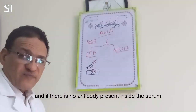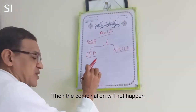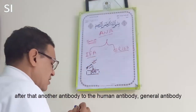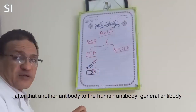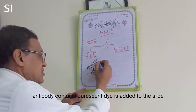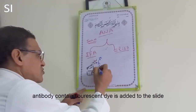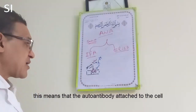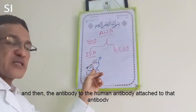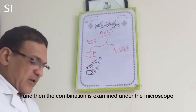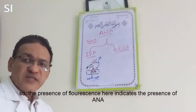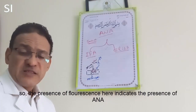If there is no antibody present inside the serum, the wash will remove everything and no antibody will remain on the slide. After that, a secondary antibody — an antibody against human antibody — attached to a fluorescent dye, is added to the slide. This means that the autoantibody attached to the cell, and then the secondary antibody binds to it in the presence of the fluorescent dye. The combination is then examined under the microscope for the presence of fluorescence, and the presence of fluorescence indicates the presence of anti-nuclear antibody.